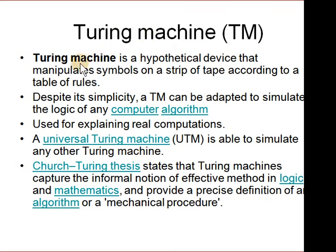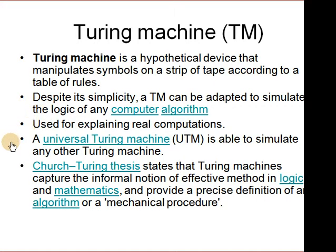A Turing machine is a device that simulates computation. It's a very simple device with a tape on which input is written; the Turing machine reads its input and writes out its output. It is a finite state machine that reads and writes symbols on the tape. Despite its simplicity, it can do any kind of calculation. The Church-Turing thesis states that Turing machines capture the notion of effective computation in logic and mathematics, and all algorithms and mechanical procedures can be described in terms of a Turing machine.